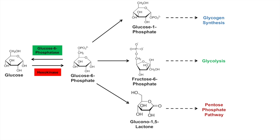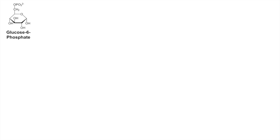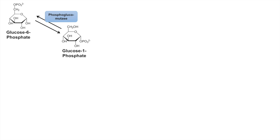If glucose 6-phosphate is used for glycogen synthesis, the first thing that happens is it's acted on by the enzyme phosphoglucomutase to form glucose 1-phosphate. This enzyme simply shifts the phosphate group from carbon 6 onto carbon 1. It's important to realize that this step is reversible, which means glucose 1-phosphate can be reprocessed into glucose 6-phosphate if the cell requires free glucose. This is important during glycogenolysis, which will be covered in another video.